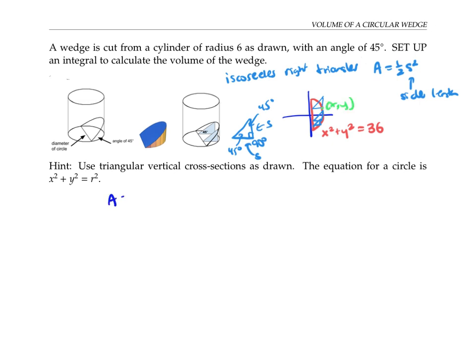So I'm going to write down that the area is one-half s-squared, but that's the same thing as one-half x-squared, where x is the coordinate of a point on the semicircle. Now, to find the volume, I'm going to need to integrate these areas, and I'm going to integrate dy, because my cross-sections are thin in the y direction. My bounds of integration are going to be given by the smallest y value, that's negative 6, since it's a circle of radius 6, up to the largest y value of 6.